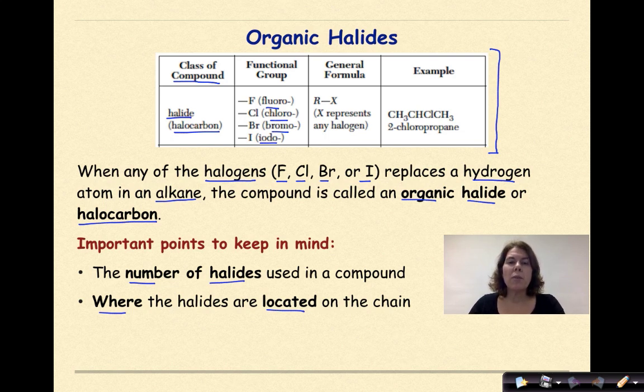Then they give you the general formula, where we have R and an X. The X represents any halogen, so fluorine, chlorine, bromine, or iodine, where the R is going to represent your hydrocarbon chain. And then finally, they give you an example. So here we have 2-chloropropane. And I know it's propane because we have 1, 2, 3 carbons. And then that chlorine, which we see right here, is coming off of our second carbon. 1, 2, 3. That is why they're calling it 2-chloropropane. And again, this is given to you as a condensed structural formula.